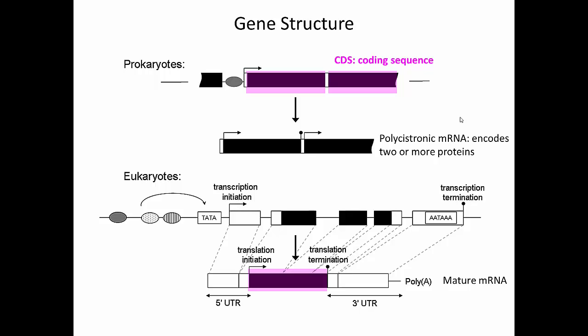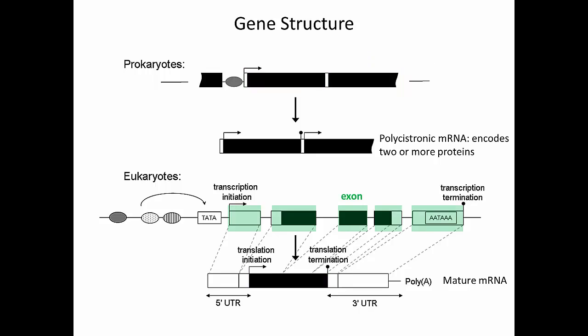The coding sequence, or the CDS, is the region of the gene that's transcribed and translated to produce the protein. But a gene is more than just the coding sequence. If we look at the gene in eukaryotes, the region of the gene that ends up in the mature messenger RNA after RNA processing is called the exon, and the region of the gene that's removed during RNA processing is called the intron.